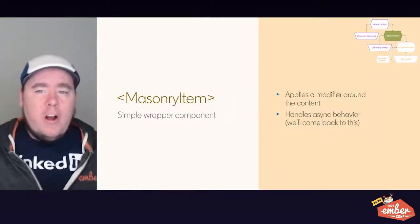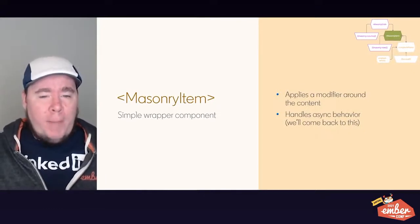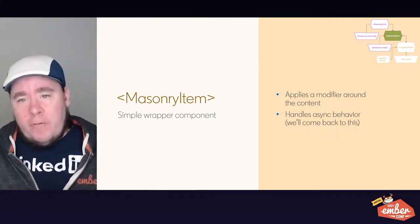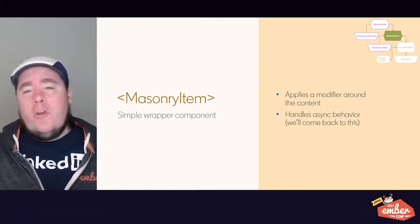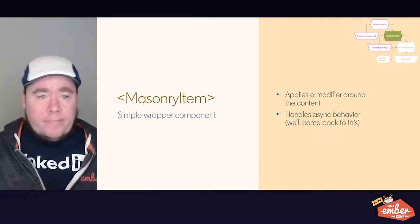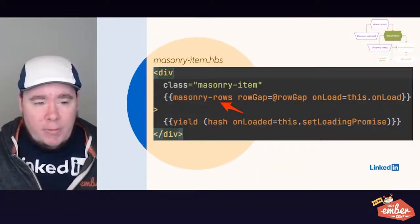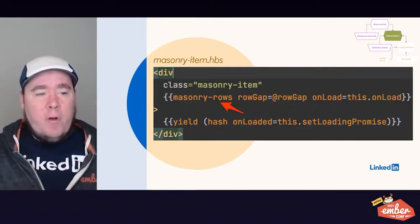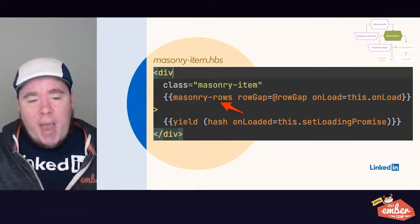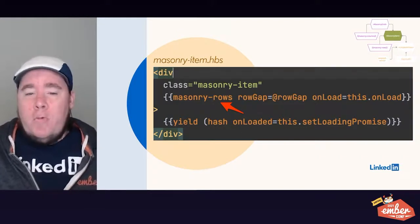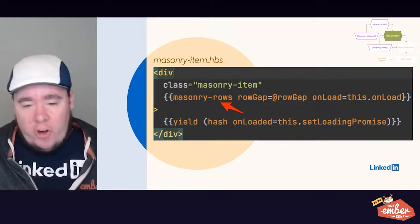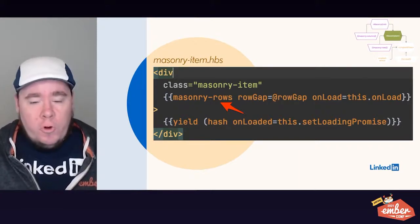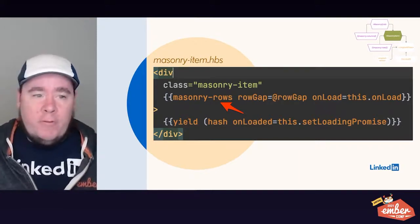Let's look at our masonry-item component, which is a simple wrapper around the user's content. It applies a modifier to the wrapper and handles some async behavior we'll cover shortly. The template applies the masonry-rows modifier on our wrapper div, passes the row gap, and also passes a promise that handles the async behavior. We yield out an action to the consumer that gets used for the async behavior as well.